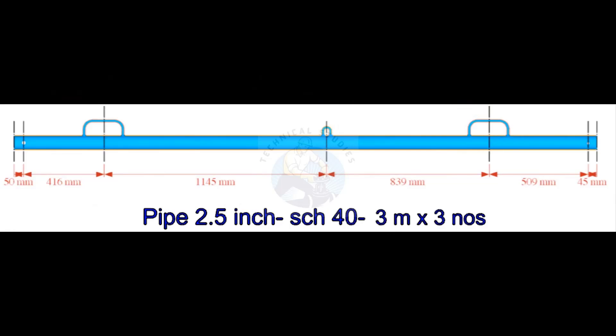The legs of the tripod are made from two and a half inch, schedule 40 pipe. The length of each leg is three meters each.